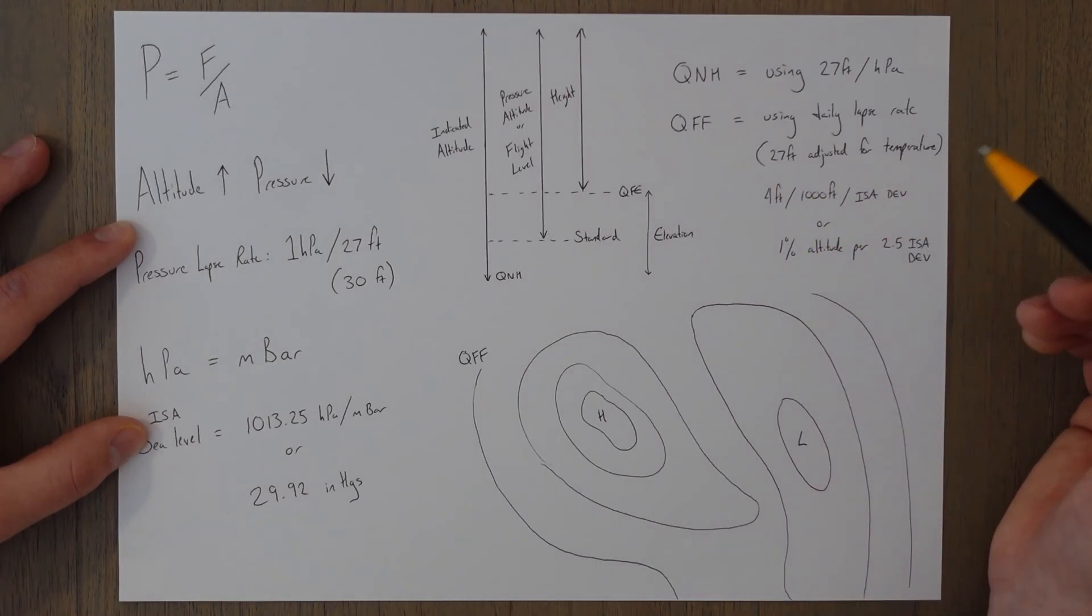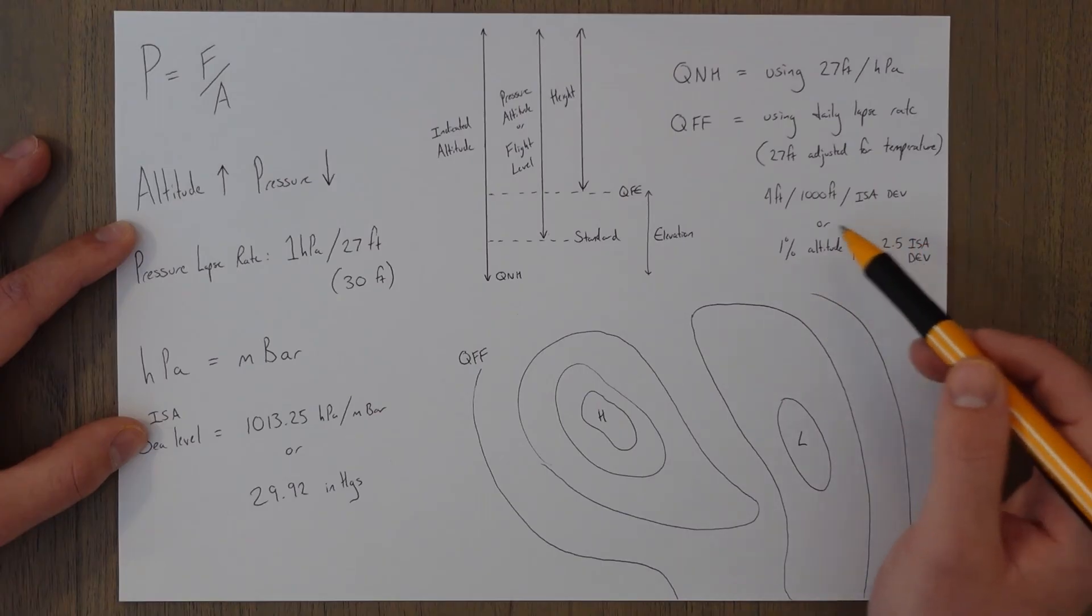And that temperature correction is four feet for every thousand feet and for every degree of ISA deviation, or a good estimation, a very accurate estimation, is one percent of altitude for every 2.5 degrees of ISA deviation.